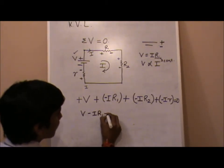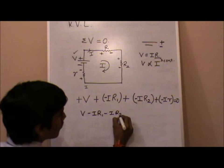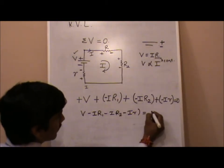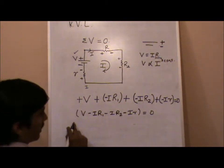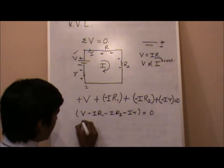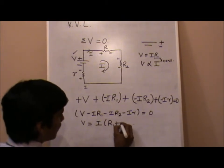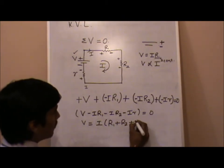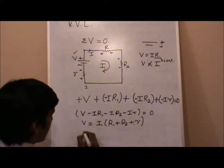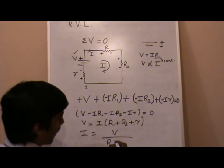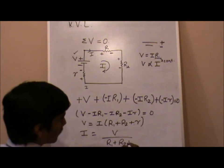Now again we're going to solve it mathematically. V minus I R1 minus I R2 minus I r equals 0. Should put a bracket like this. V, we're taking I as common, R1 plus R2 plus r. Now value of I will be V upon R1 plus R2 plus r.